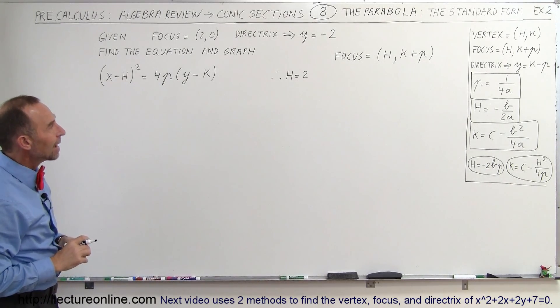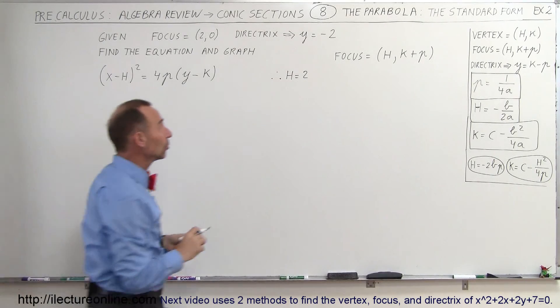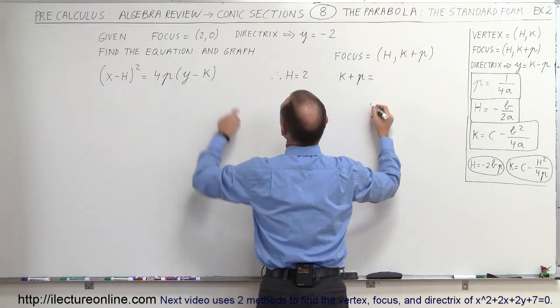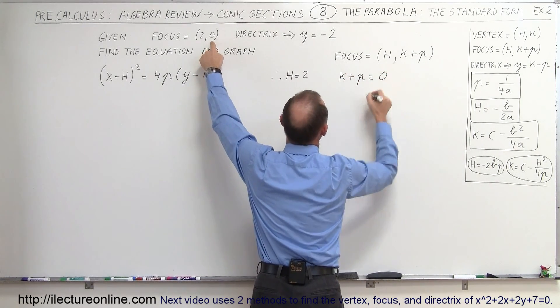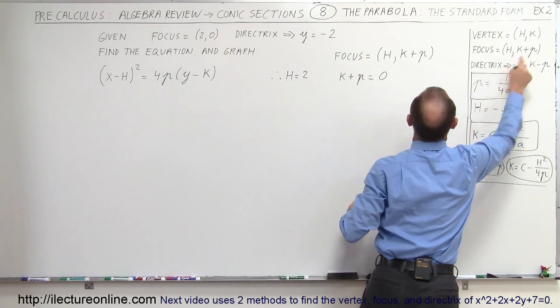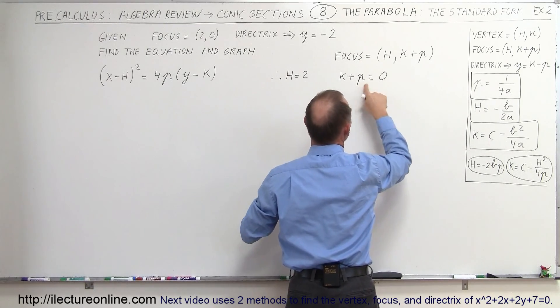Now we need to find k but we don't know what k is. We do know what k + p is. We do know that k + p is equal to 0 because you can see that the focus is (h, k+p), so therefore k + p must equal 0.